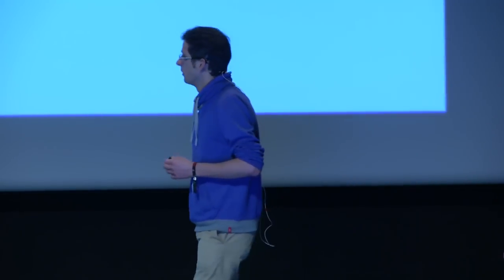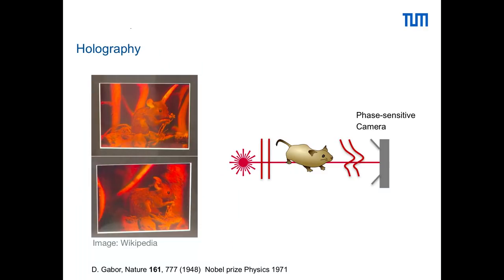It turned out that you can do it, and in a surprisingly simple way. There is a technique that essentially solves this problem, and it's holography. Holograms are these amazing pictures that appear three-dimensional, that you can tilt and look at from different angles — not like a photograph, but more like a window into a virtual world that has been frozen. You can make them in a fairly simple way, without even needing a lens. All you need is to illuminate your object with coherent light and record it on a phase-sensitive camera.